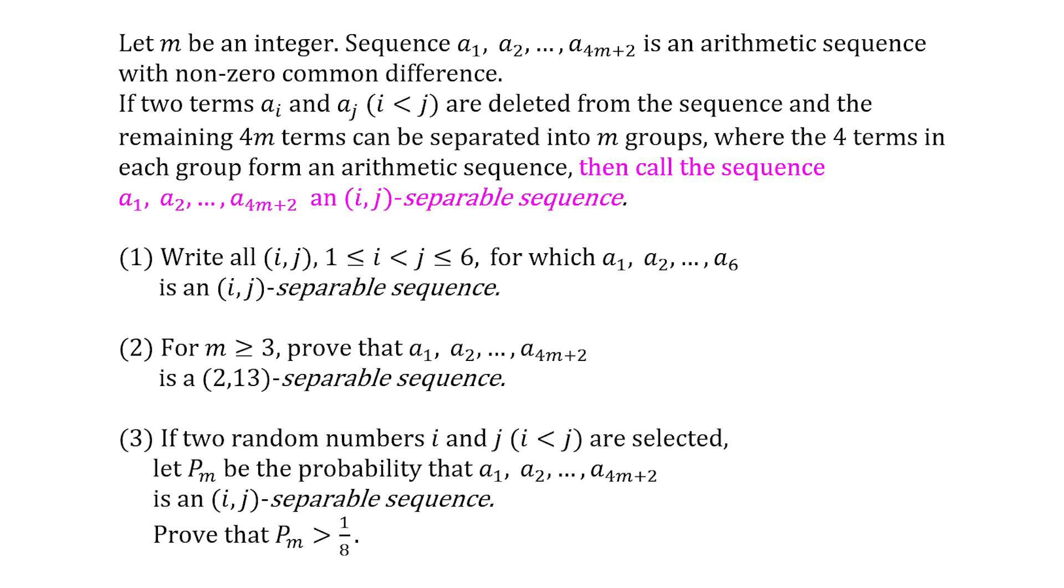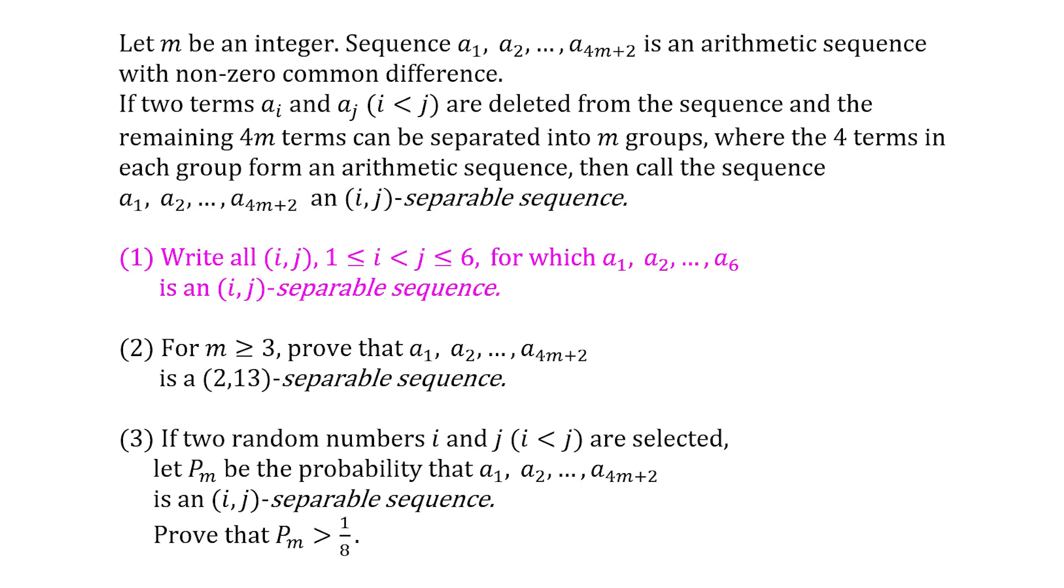It does take a while to get your head around it. Feel free to pause the video, read it again or as many times as you like. Part one is to write all (i,j) between 1 and 6 for which a₁, a₂, ..., a₆ form an (i,j)-separable sequence.